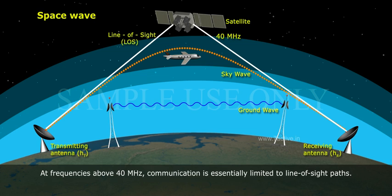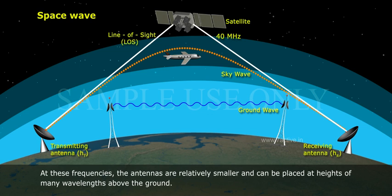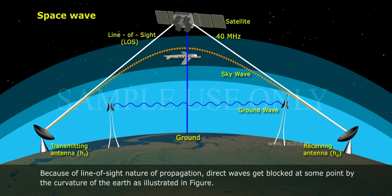Space waves are used for line-of-sight (LOS) communication as well as satellite communication. At frequencies about 40 megahertz, communication is essentially limited to line-of-sight paths. At these frequencies, the antennas are relatively smaller and can be placed at heights of many wavelengths above the ground.